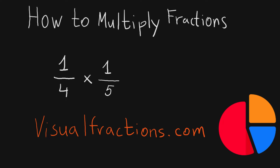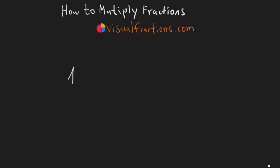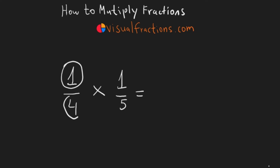Welcome to this tutorial on how to multiply fractions, specifically 1 quarter by 1 fifth. One fraction has a numerator of 1 and a denominator of 4, while the other has a numerator of 1 and a denominator of 5.